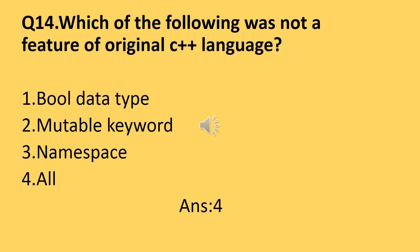Question number fourteen: which of the following was not a feature of the original C++ language? The answer is 'all of the above' — the bool data type, the mutable keyword, and namespace were all not present in the original C++ language. The C++ standard committee added these keywords and features to C++ later.